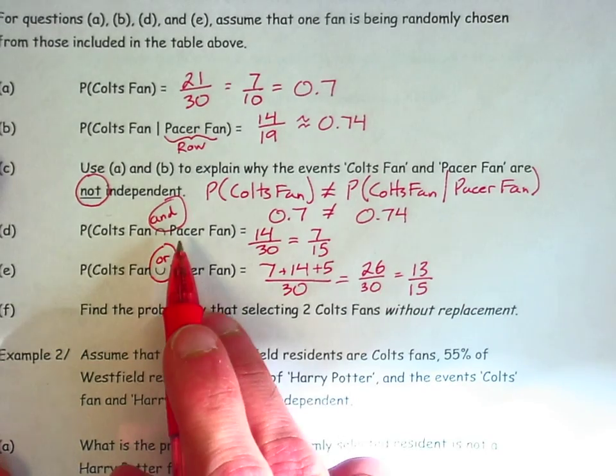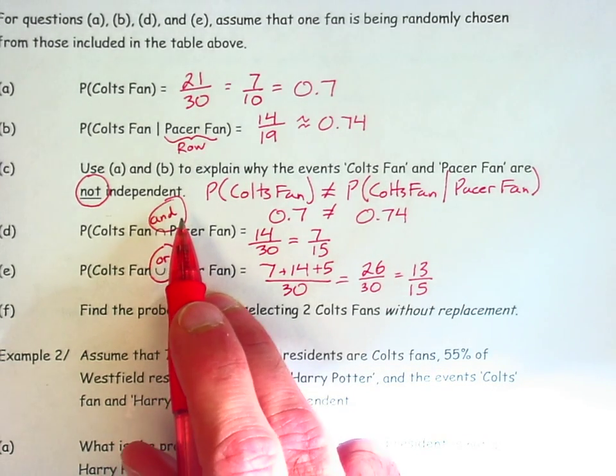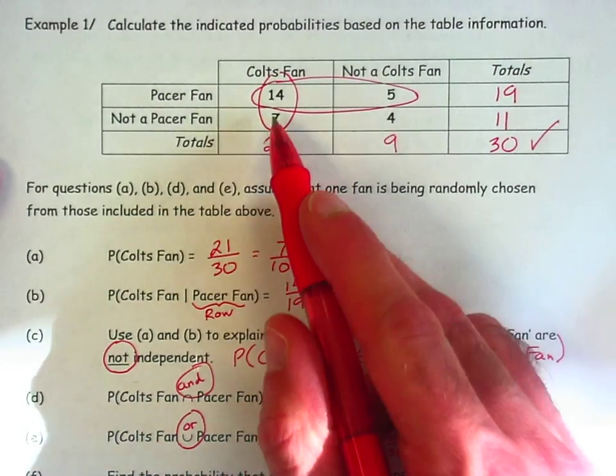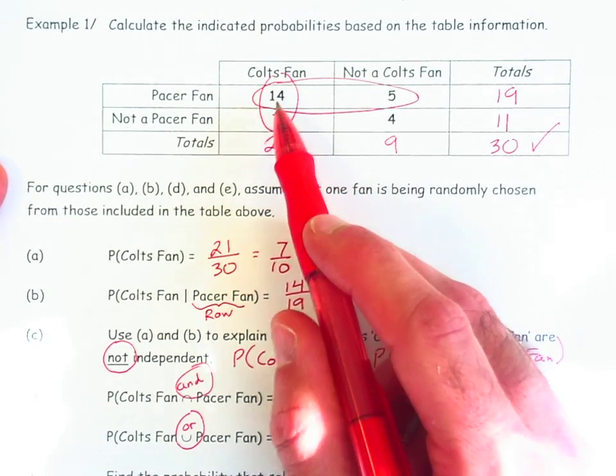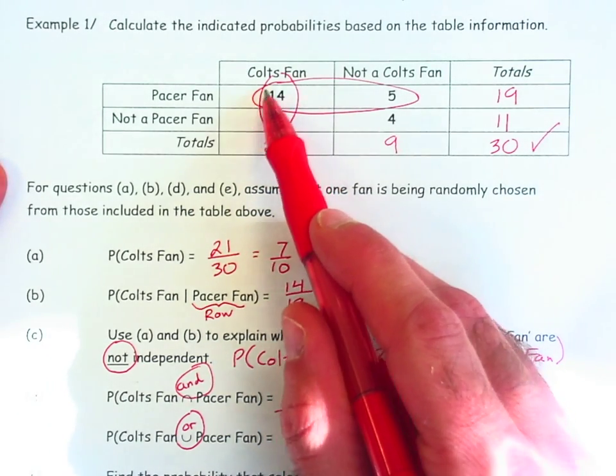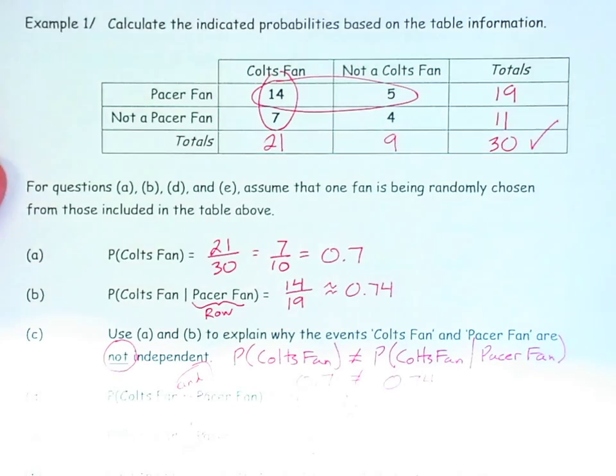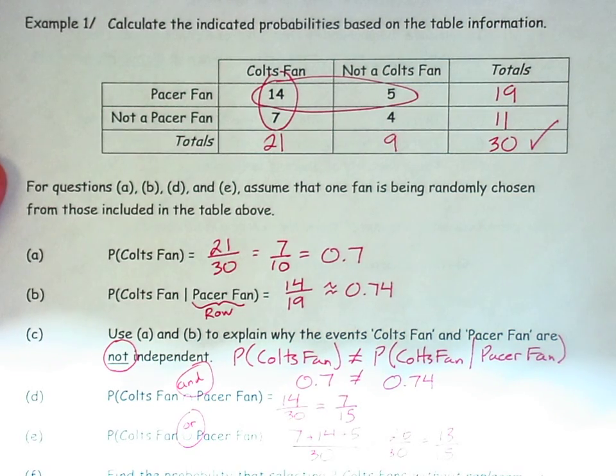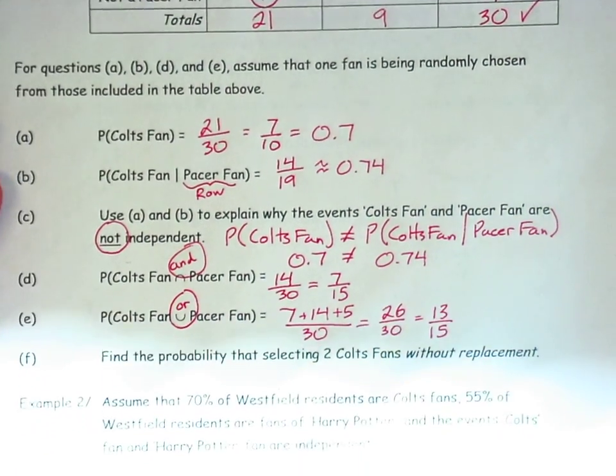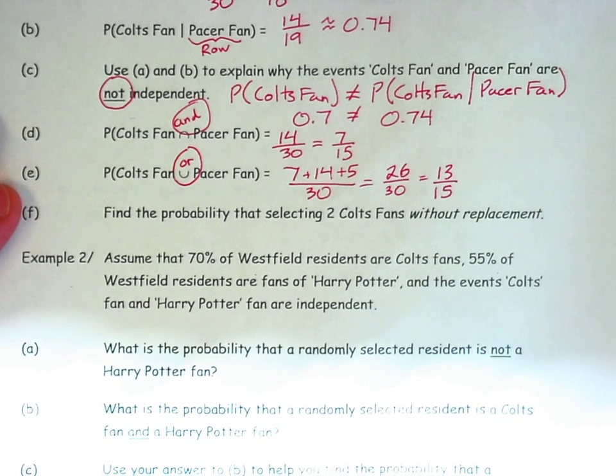So in an and question, I am specifically looking for the overlap. That's the 14. In an or question, I want to be careful not to double count that overlap. That's something we'll see in example 2 in just a moment if you watch that video also. So lastly then, part F.